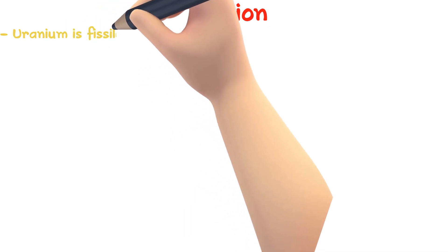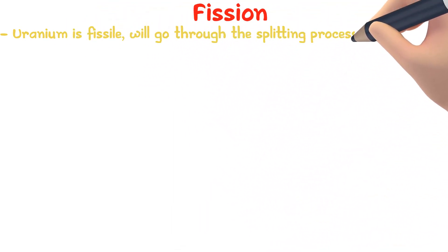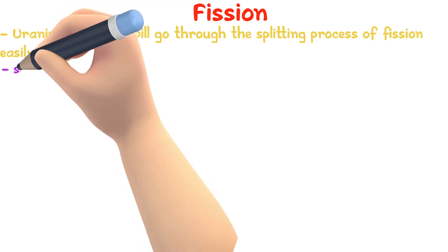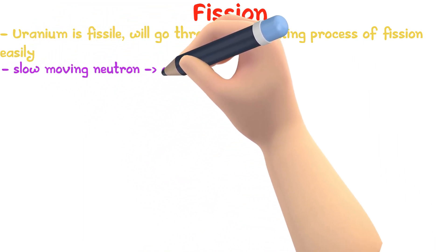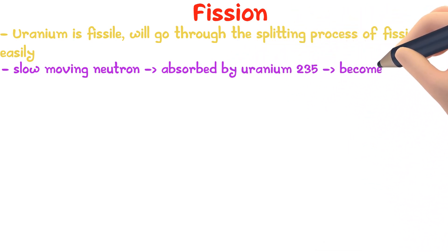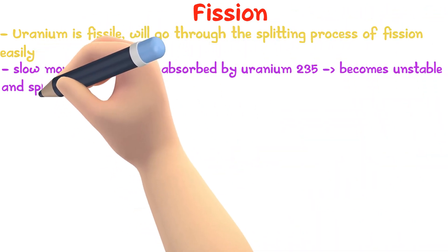Uranium is a fissile material, which means it goes through the splitting process of fission easily. A slow-moving neutron is absorbed by the nucleus of a uranium-235 isotope, which becomes unstable and splits apart.